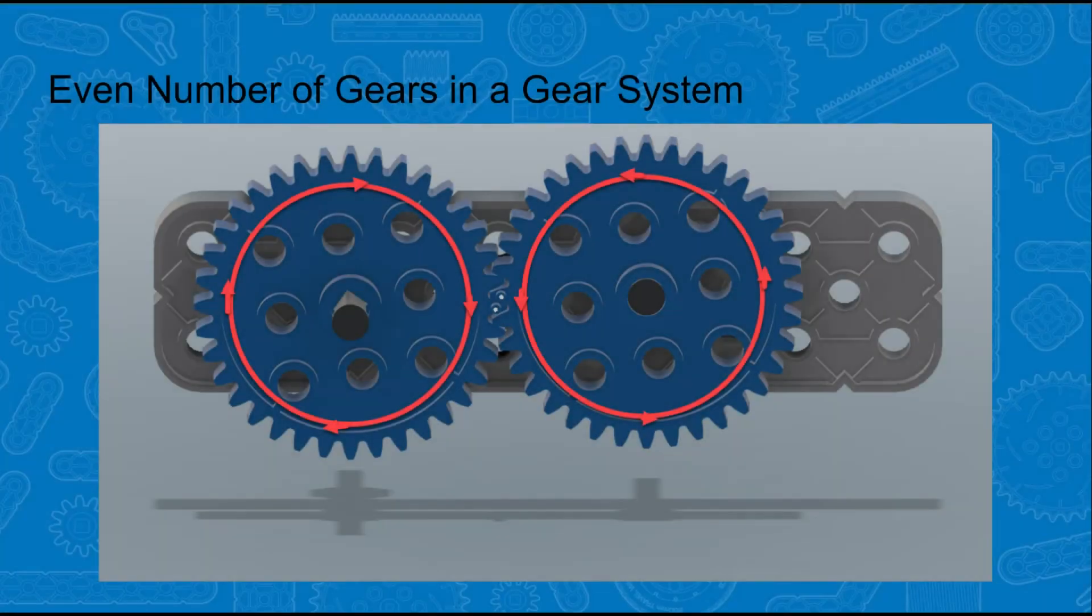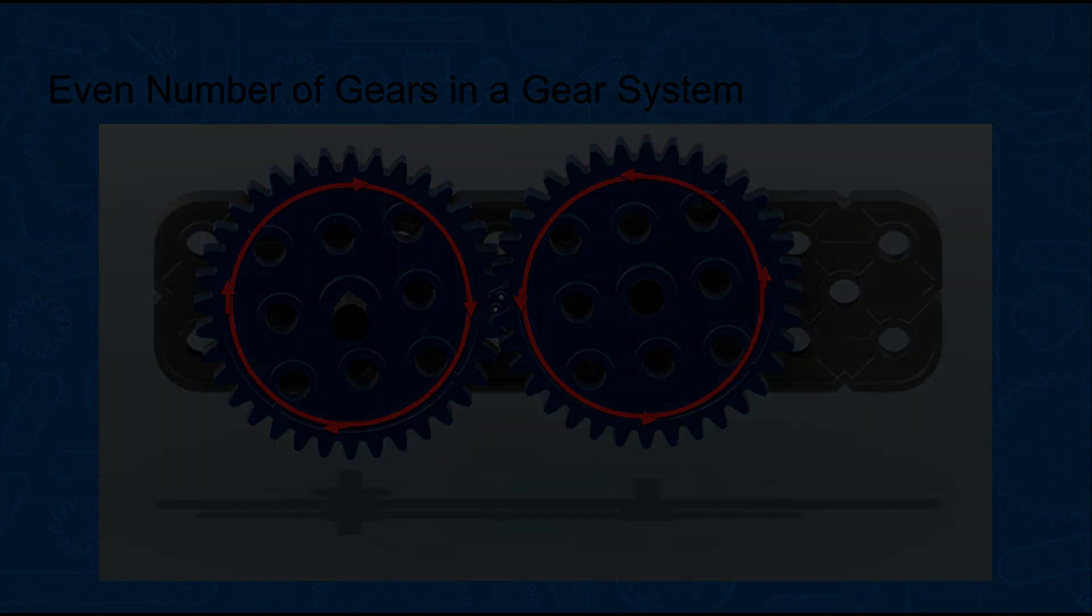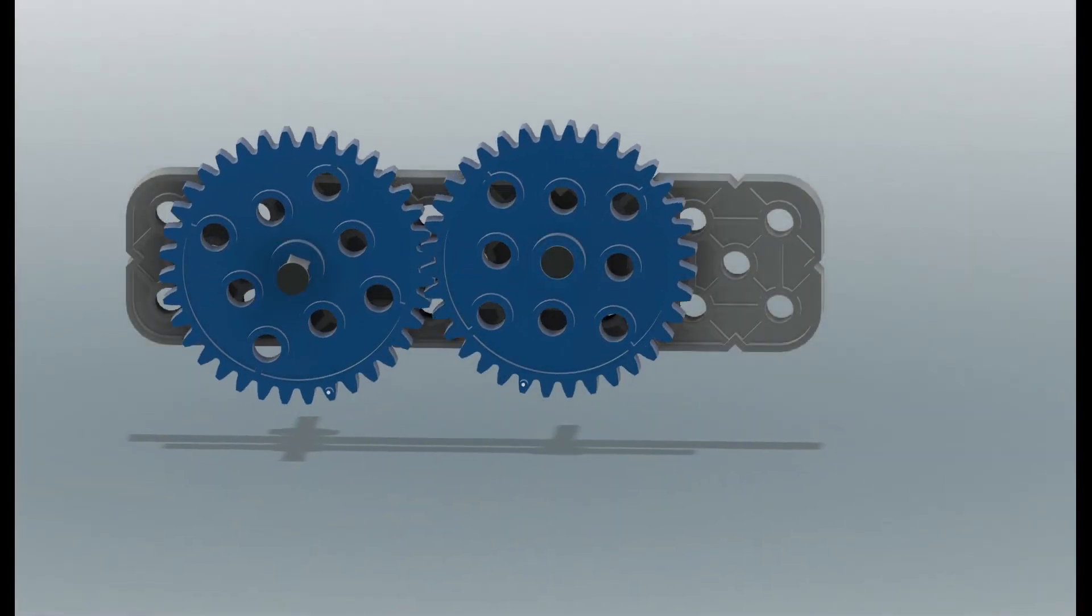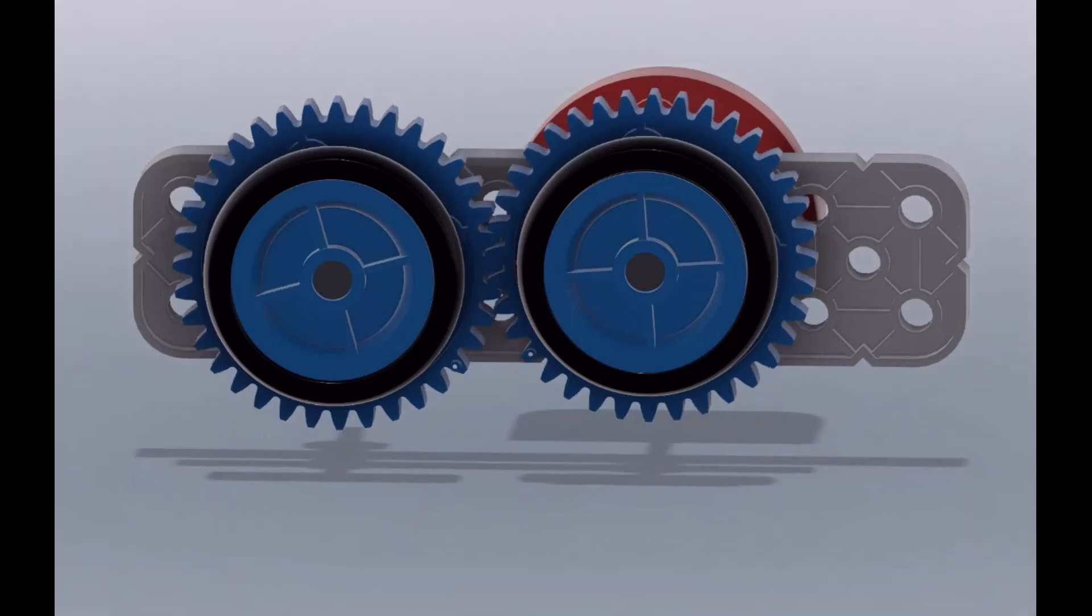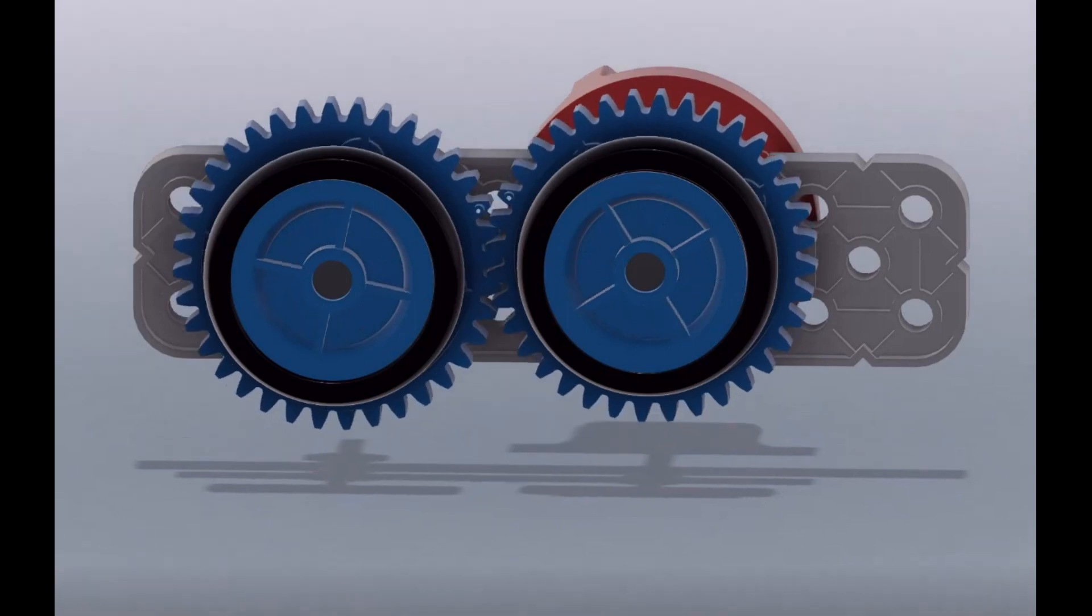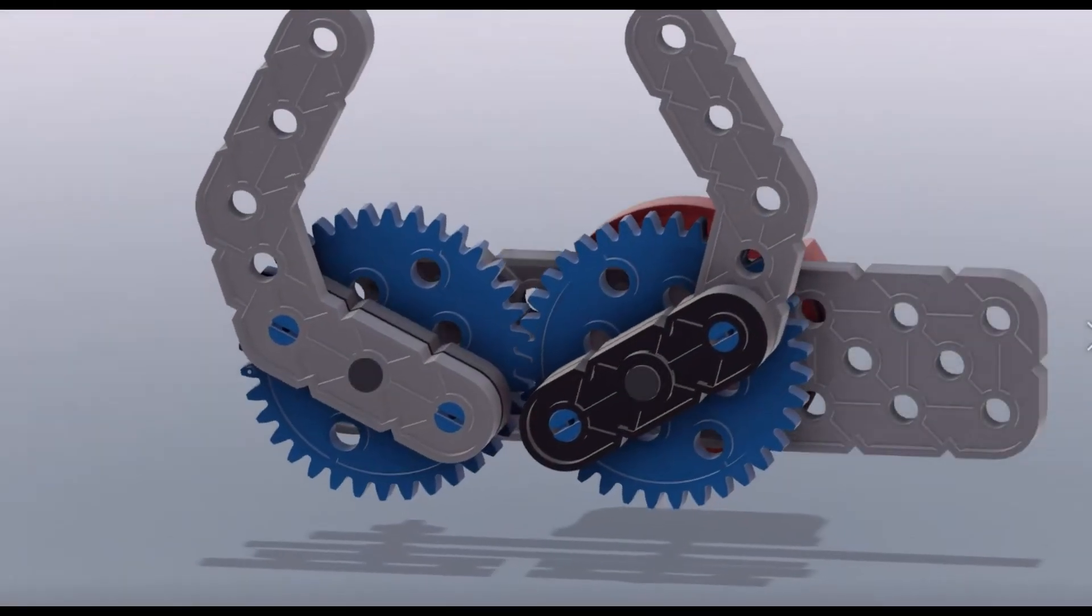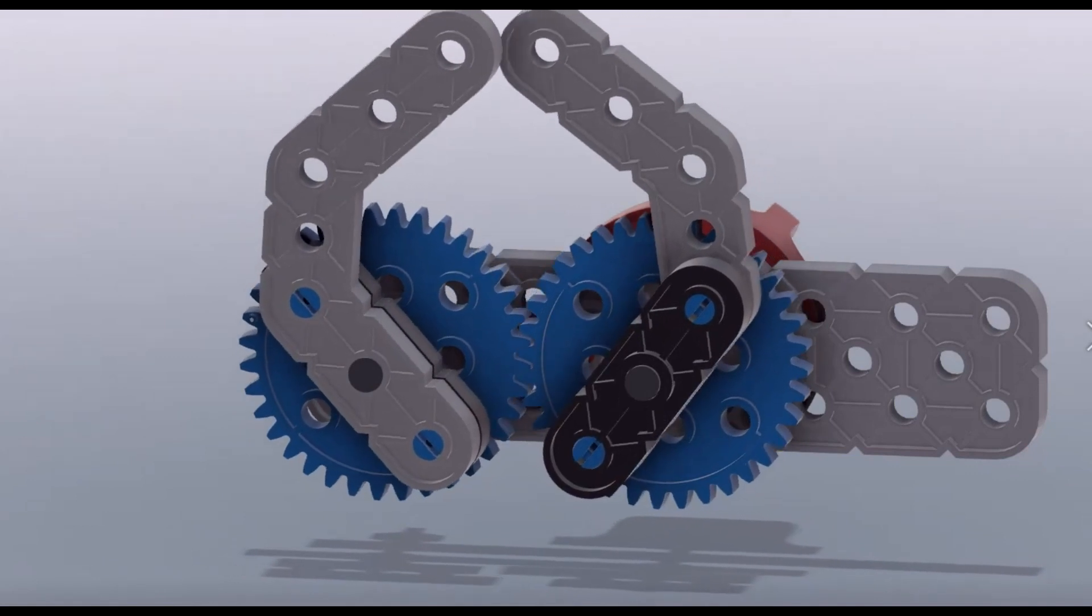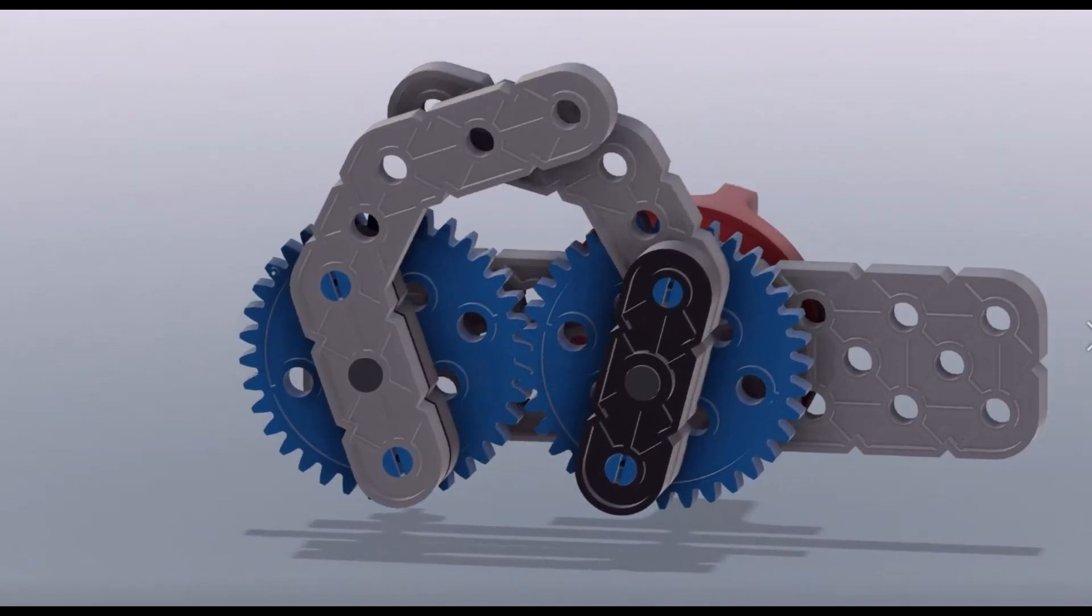When there is an even number of gears in a gear system, the output gear rotates in the opposite direction from the input gear. An even number of gears would not work very well for a drive system because the wheels would work against one another. However, an even number of gears would work very well for a pair of grippers on a claw.